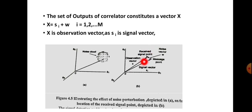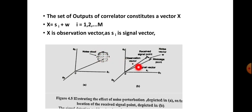The tip of the observation vector is the received signal point. There is also a noise cloud around each message point. When a signal is transmitted through the channel, the noise affects it. The noise cloud represents how the noise causes the received signal point to scatter randomly around the transmitted message point in Euclidean space.